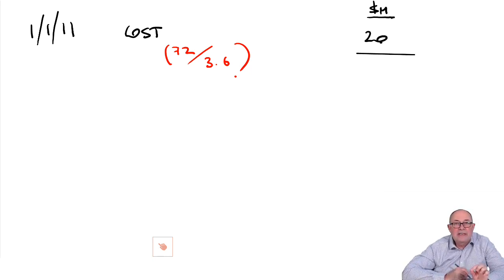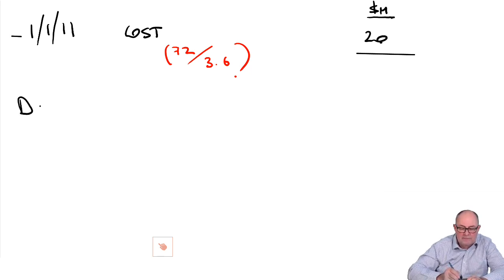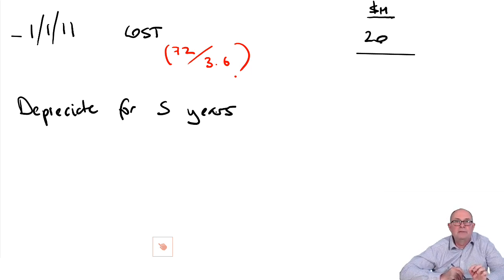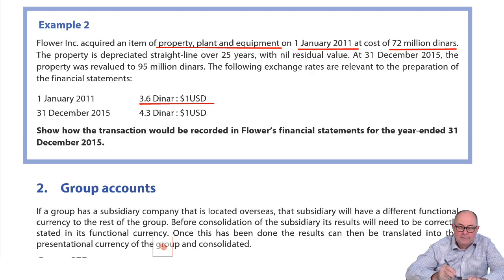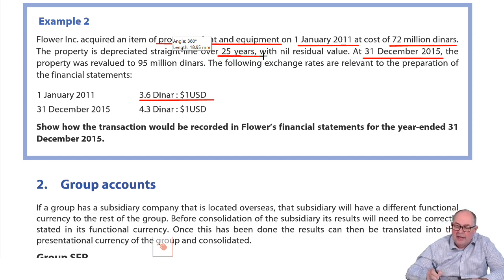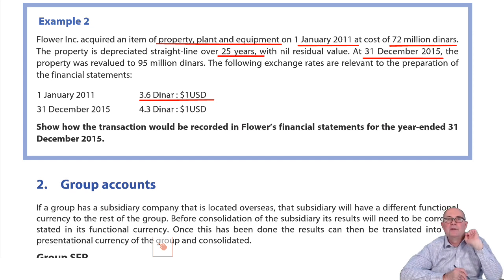72 over 3.6 means it would have been in the ledger at $20 million. The asset is then depreciated for five years — five years until today. Today is the date of revaluation, the 31st of December 2015. The life was 25 years; five have gone and 20 to go.